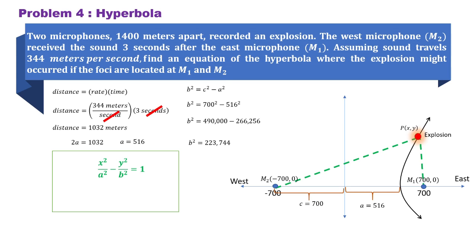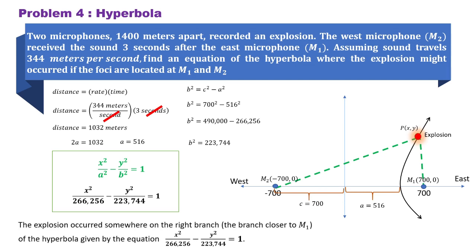Since we're looking at a hyperbola which is horizontal and centered at the origin, we're going to follow this format and substitute the computed values. So in conclusion, the explosion occurred somewhere on the right branch, closer to M sub 1, of the hyperbola given by the equation x squared over 266,256 minus y squared over 223,744 is equal to 1.